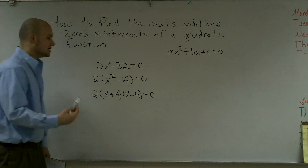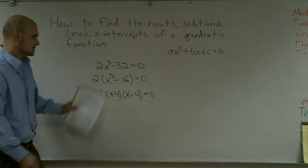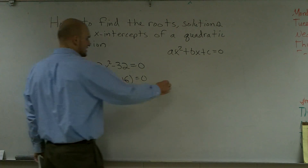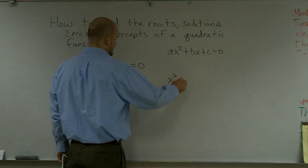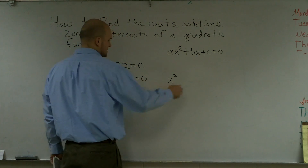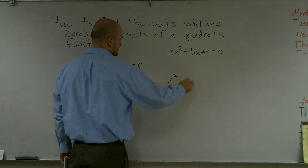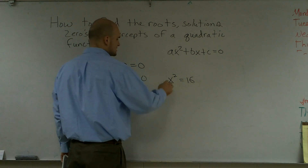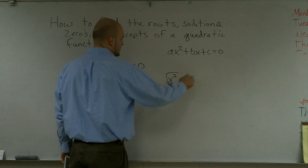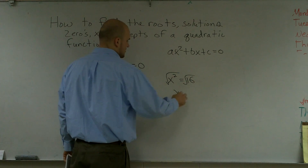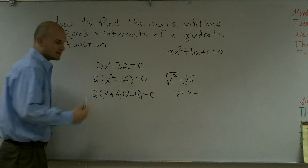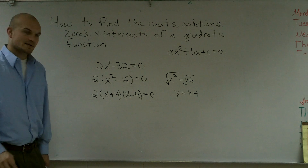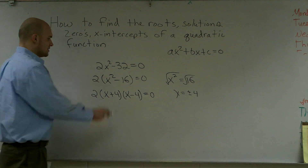You could also do this another way: add 16 to both sides to get x squared equals 16, then take the square root. You can do it that exact same way as well.